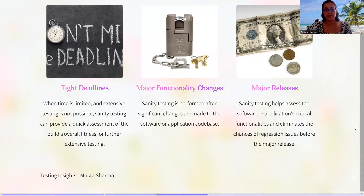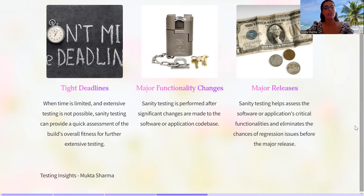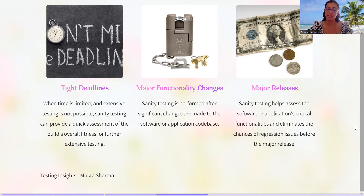When should we perform sanity testing? Three real-time examples: First, when you have tight deadlines and time is limited and extensive testing is not possible, you can quickly check the core functionalities and get confidence in the system. Second, sanity testing is performed after significant changes are made to the software or application. Whenever any major functionality changes happen, you do a sanity test. Third, whenever there is a major release happening, before that you can check the core functionality and do sanity testing.